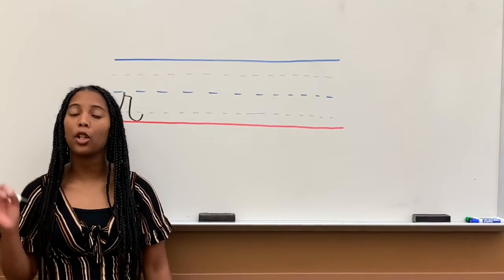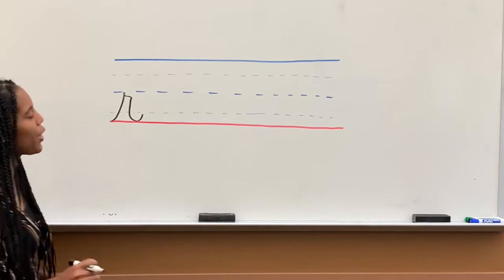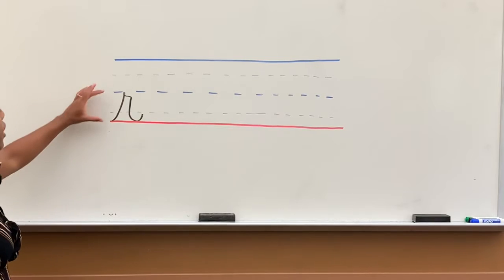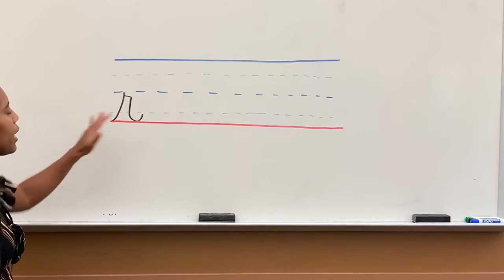Today we are learning cursive letter R, lowercase letter R. Lowercase letter R stays underneath the middle dotted line and touches the red line as well.